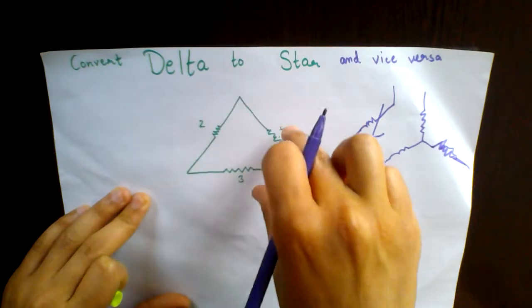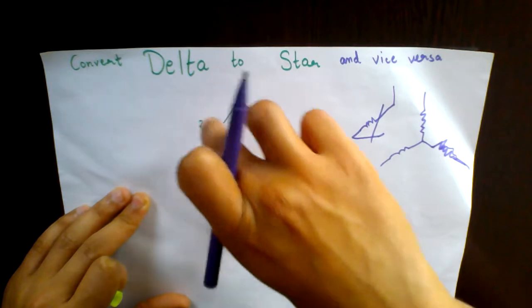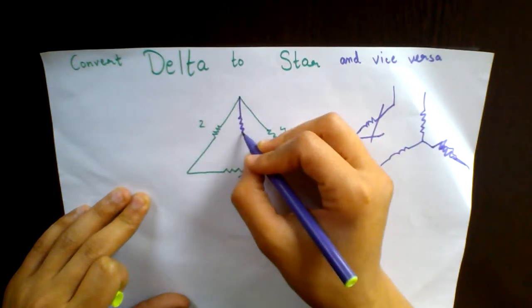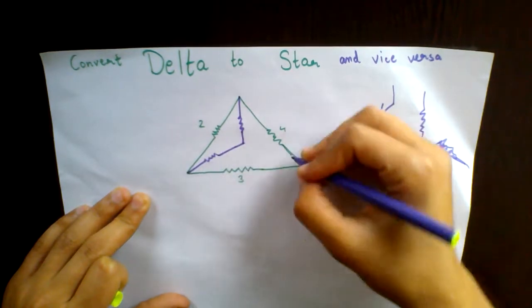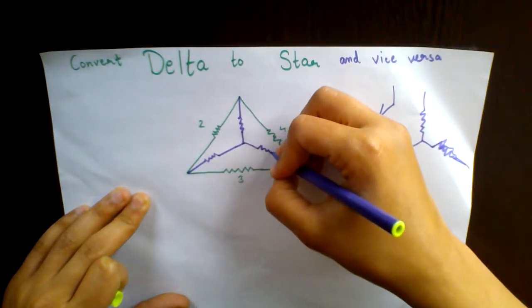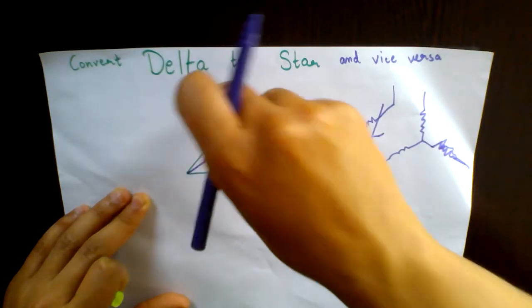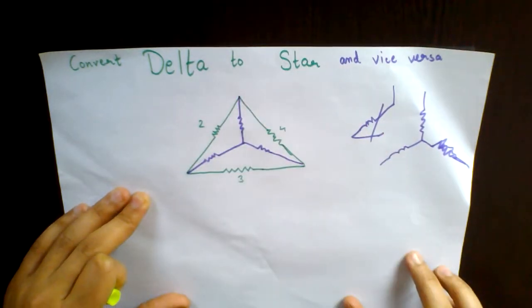You make an equivalent star inside the diagram itself. I make an equivalent star for the delta network. So you have to convert this delta, which is outside in green color, into an equivalent star network. What do you start?